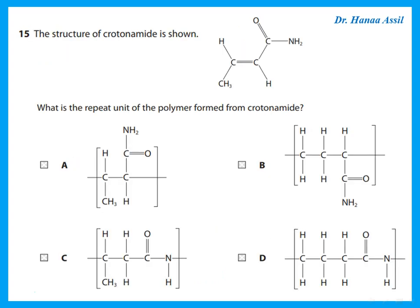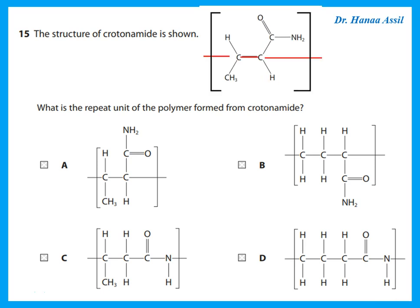The structure of crotonamide is shown, and we need the repeat unit of the polymer formed from it. Crotonamide contains a double bond, so when we draw the addition polymer, the double bond becomes single. We draw a bond on the left and a bond on the right of the monomer unit. The correct repeat unit is option A.